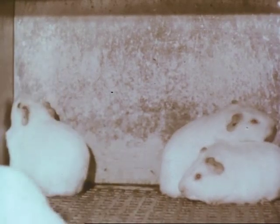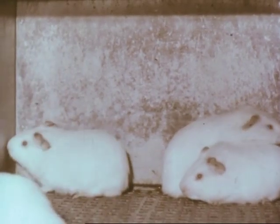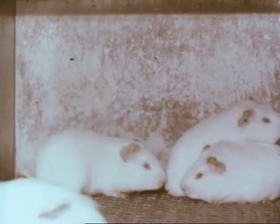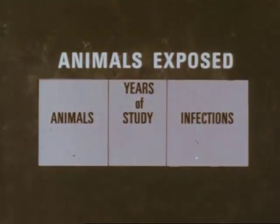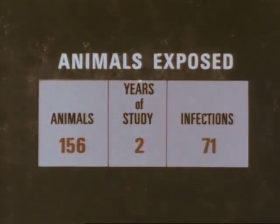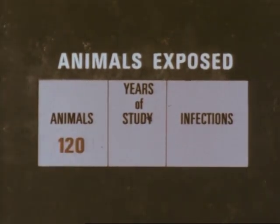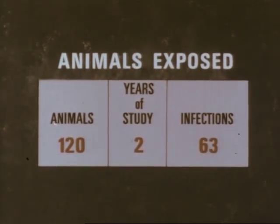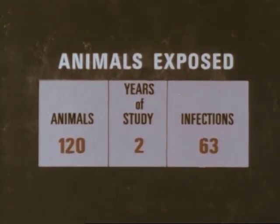And second, if so, whether such airborne infection can be eliminated by disinfecting the air. When an average of 156 animals were exposed continuously to ward air during the first two years of the study, 71 infections resulted. Out of an average of 120 exposed continuously during the second two years, 63 infections resulted. This test leaves no doubt that infectious droplet nuclei were present in the air of the tuberculosis ward.